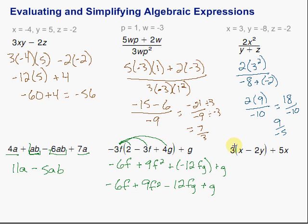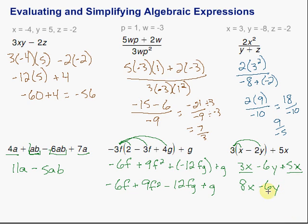Let's take a look at this last one. Again, we use the distributive property to get rid of the parentheses, multiplying 3 by each thing inside. 3 times x is 3x, and 3 times negative 2y is minus 6y, plus 5x hanging out on the outside. Now, we've got 3x and 5x — same variable to the same power — so that gives us 8x. We've got minus 6y. We have x's and y's — we can't simplify that any further, so we're all set.